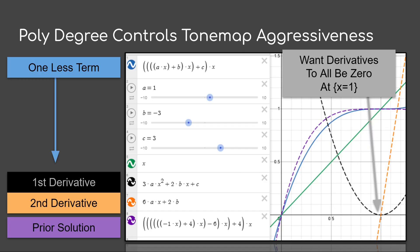So in this, we're going to look at a polynomial with one less term than the prior solution, and that'll be the blue curve. And then we have its first and second derivatives in the black and the orange dotted curve. And then we have the prior solution in the purple dotted curve. And you can see we're a little less aggressive here by dropping a term.